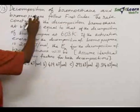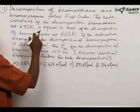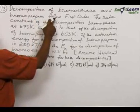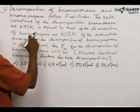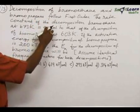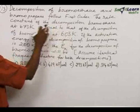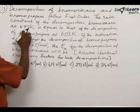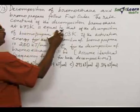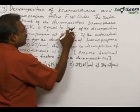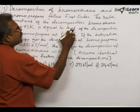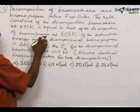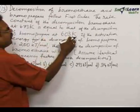Problem number 13: Decomposition of bromoethane and bromopropane follow first order. The rate constant of the decomposition of bromoethane at 673 Kelvin is equal to that of the decomposition of bromopropane at 603 Kelvin.